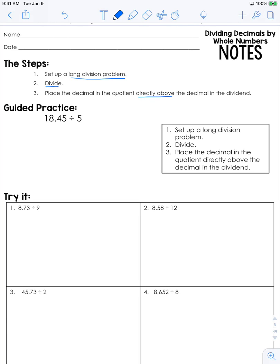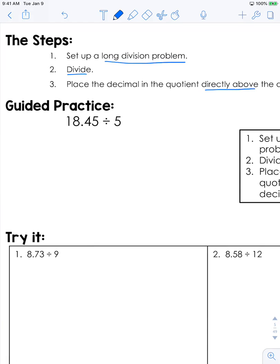Let's look through this guided practice problem together. We're going to set up a long division problem with 18.45 on the inside and 5 on the outside. Let's just divide as if the decimal was not there for the time being.